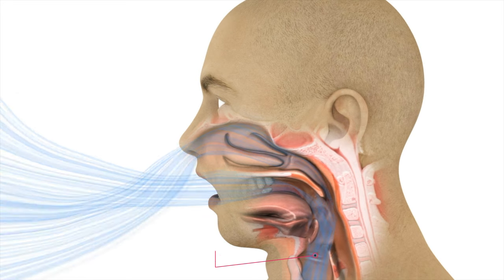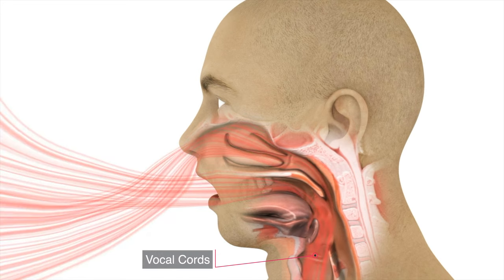Air flow out of the lungs can produce vocal sounds when passing between the vocal cords causing it to vibrate.